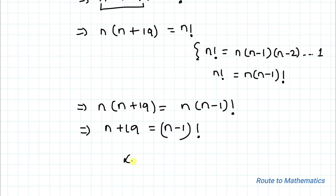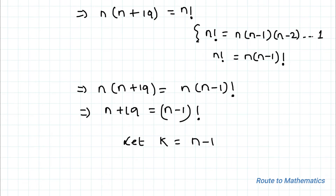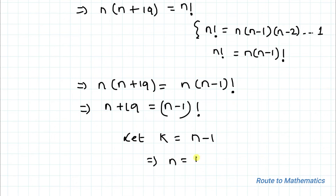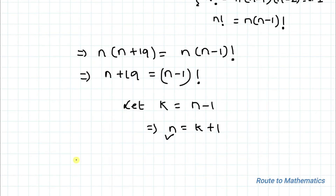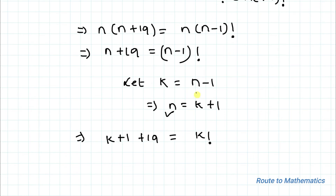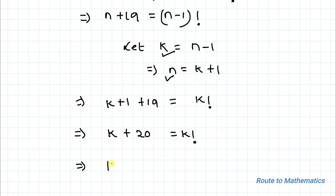Let's substitute k = n − 1, which implies n = k + 1. Substituting into the equation, we have (k + 1) + 19 = k!, which simplifies to k + 20 = k!.